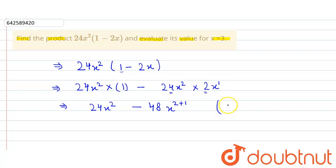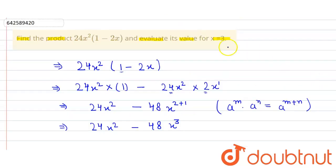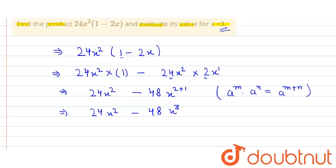We have used the property of exponents which is a^m × a^n = a^(m+n). So we get 24x² minus 48x³. This is the product, and now we evaluate its value for x equals 3.